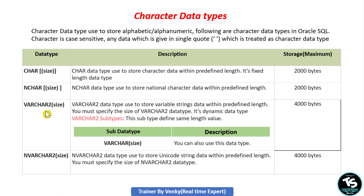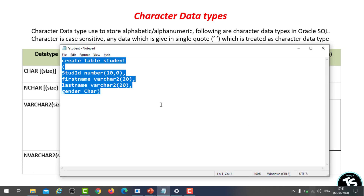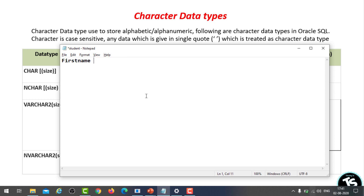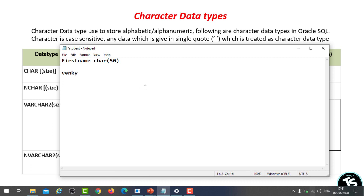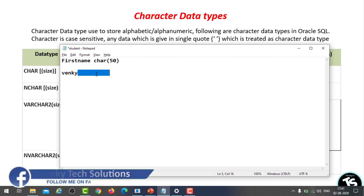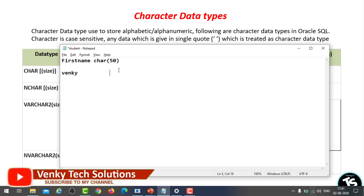VARCHAR2 is also used to store character data, and its maximum size is 4000 bytes. You must specify the size because size is mandatory, and it is a dynamic data type. What is the difference between fixed-length and dynamic data type? For example, if I declare first_name as CHAR(50) and I insert only 'Venki' — that is 5 bytes — the remaining 45 bytes of space are wasted. In the case of CHAR, the Oracle server applies blank padding to fill the remaining space.